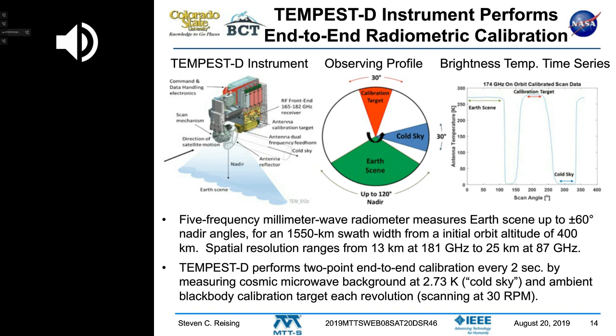The antenna continuously rotates at 30 RPM. Every two seconds we view two calibration points — one cold sky reference from the cosmic microwave background at 2.7 Kelvin, which is very homogeneous and isotropic at our frequencies, and one embedded ambient calibration target inside the spacecraft made by Zax Millimeter Wave in California.